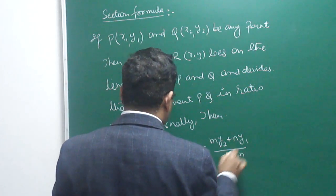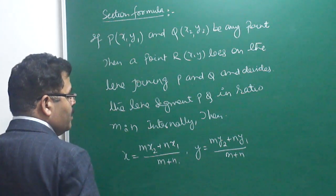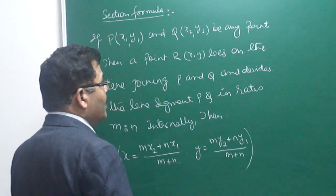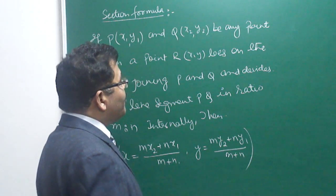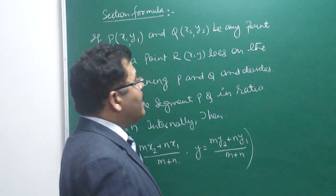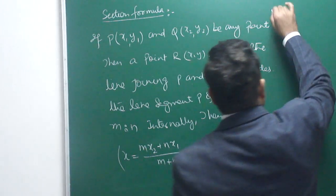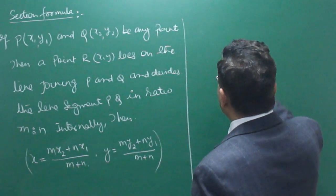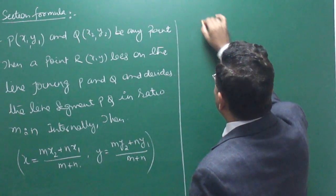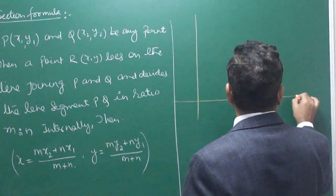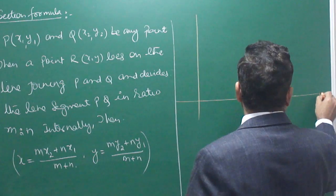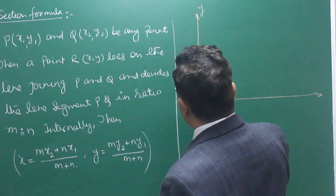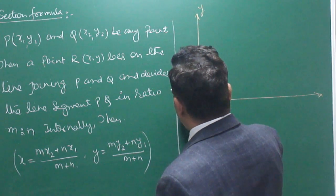So we have two formulas. The formula is X = (Mx2 + Nx1)/(M + N) and Y = (My2 + Ny1)/(M + N). Now I want to show you why this formula came and how it comes. Let me explain. This is the Cartesian system — we have the X axis, Y axis, and the origin.